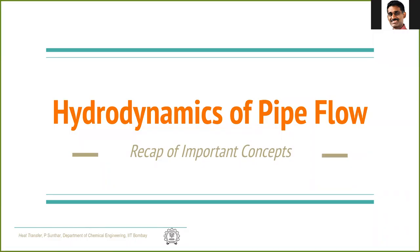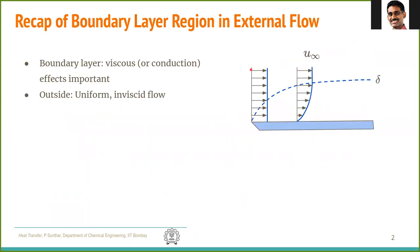In this video, we'll see the hydrodynamic aspects of pipe flow as a prelude to understanding heat transfer in internal flows. Firstly, let's recap the boundary layer in a flat plate. In a flat plate, when you have a uniform velocity approaching, a boundary layer develops very close to the surface. In the boundary layer, viscous or conduction effects are important, and outside the flow is uniform, inviscid, or conduction can be negligible.